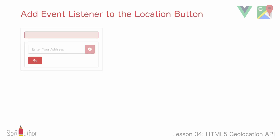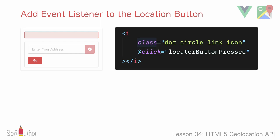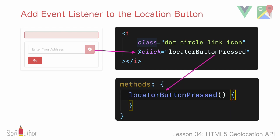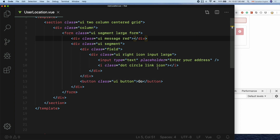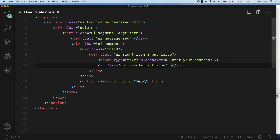Let's see how to add a click event handler to the locator button. All I have to do here is add a click event handler called locatorButtonPressed on the locator icon, which is an 'i' element. In Vue you would create all the event handler callback functions inside the methods object, which is the standard best practice.